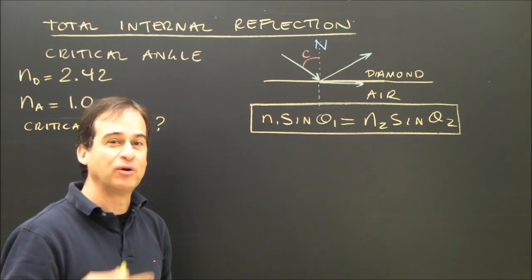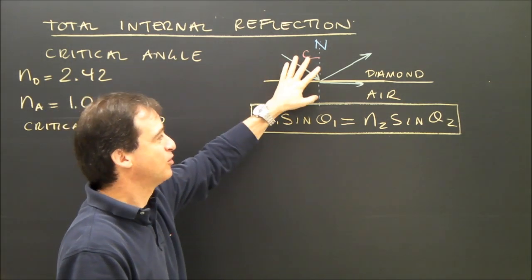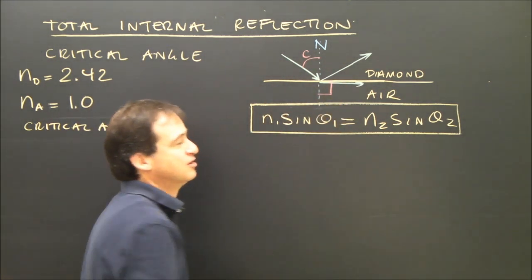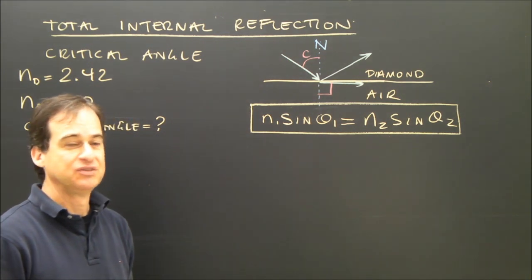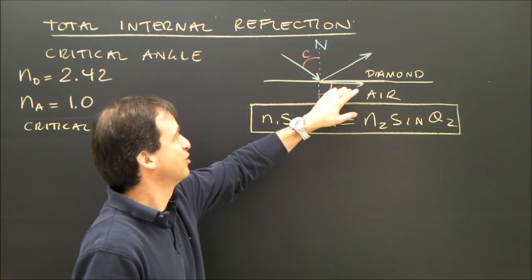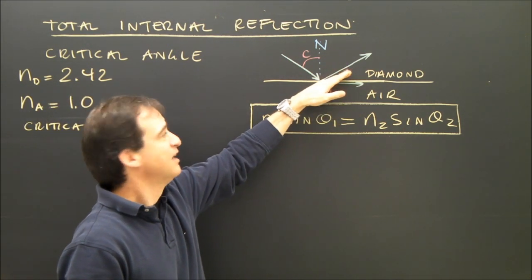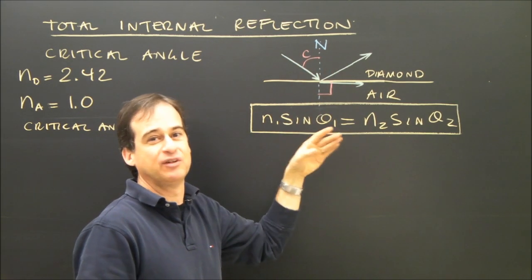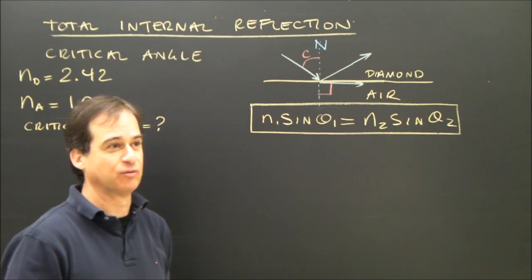For the critical angle, the angle of refraction is 90 degrees when the critical angle happens. So as soon as this refracts at 90 degrees, it's reflecting. Any angle greater than the critical angle, and it will definitely be acting like a mirror and have total internal reflection.